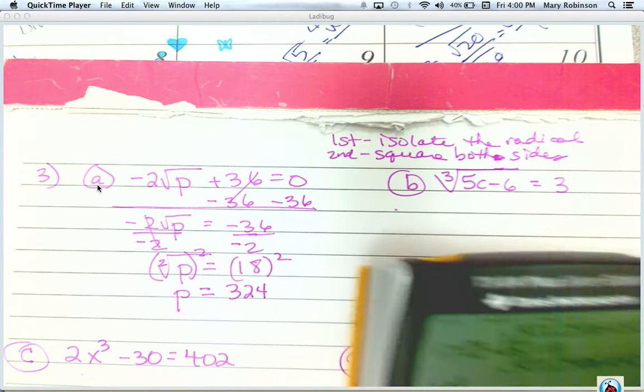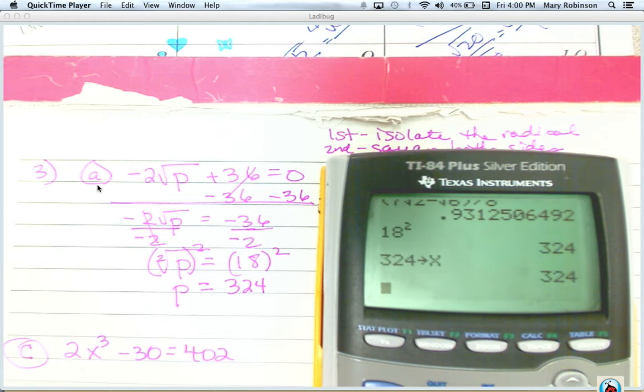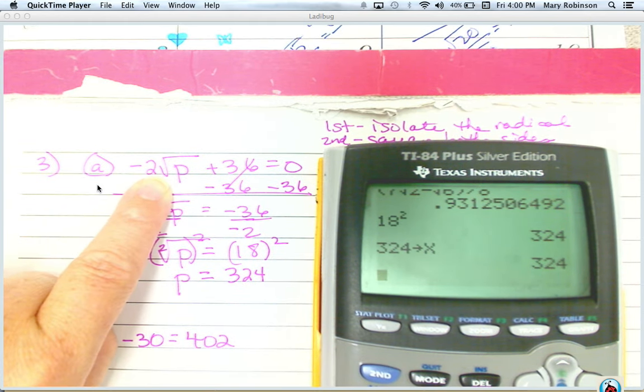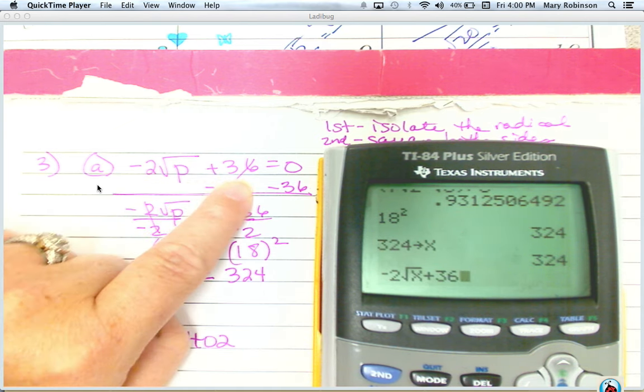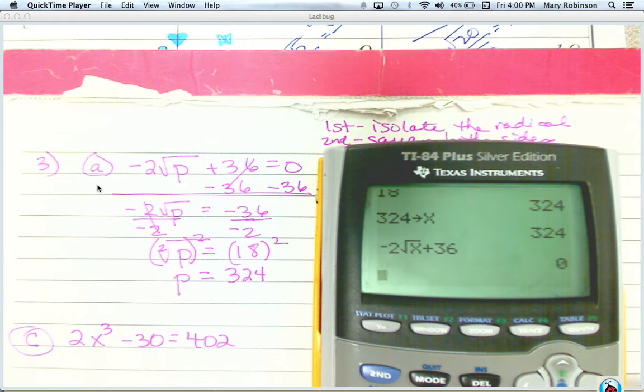Now, I taught you to make sure that you store your value, so let's do 324 store as x, and then substitute it back into the original equation. So negative 2 square root of x plus 36, and if 324 is a correct answer, we'll get 0. And we do, so that tells us our answer is correct.